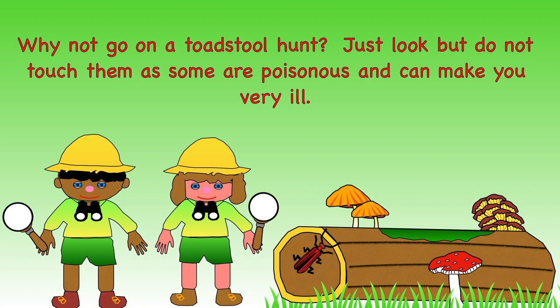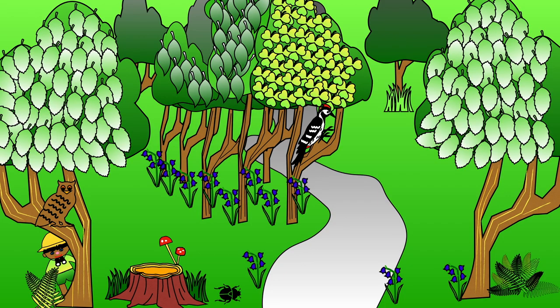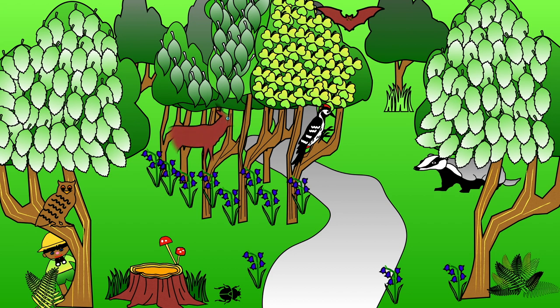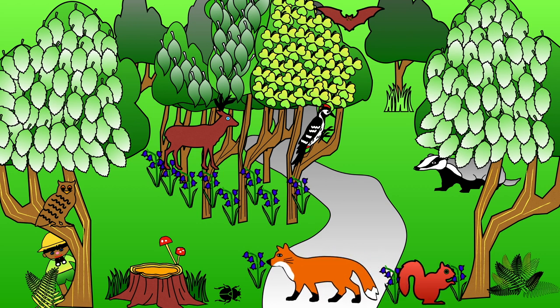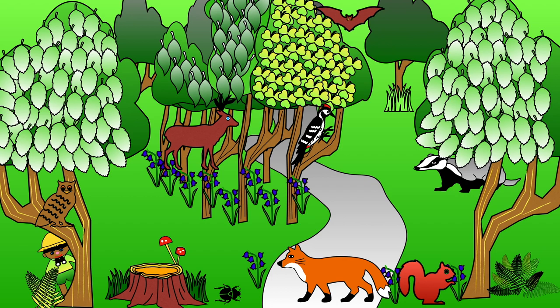The same applies to any berries you find in the forest. Many different species call the forest or woodland their home — how many different animals can you see? Bats, woodpeckers, squirrels, owls, foxes, deer and badger all live in the woodland habitat. Some are easier to spot than others, as some such as owl, badger and fox tend to sleep in the day and come out at night.